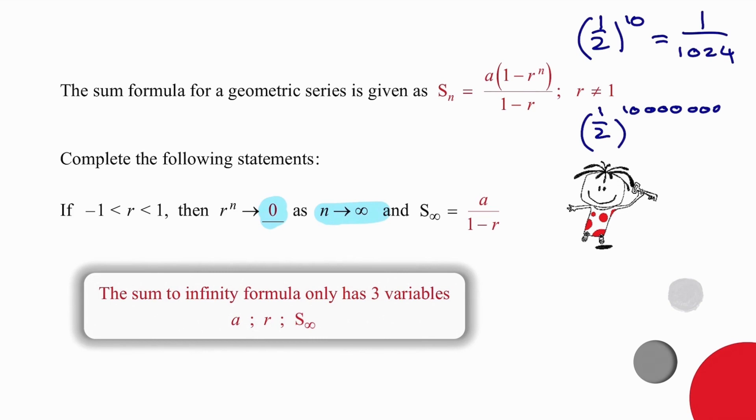This means that in the formula, r to the n becomes zero if we're working with a sum to infinity. So the sum to infinity in the numerator only has a and in the denominator it has 1 minus r. Notice that there are only three variables in the sum to infinity formula: the sum to infinity itself, which is the result, the ratio and the a value.